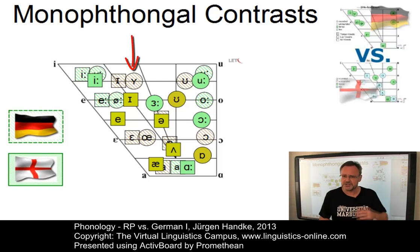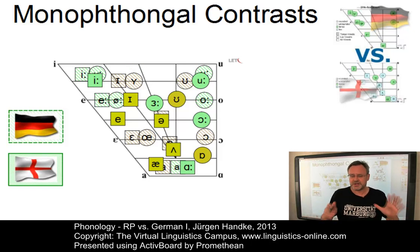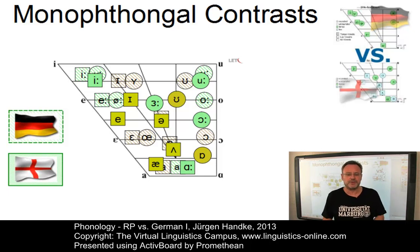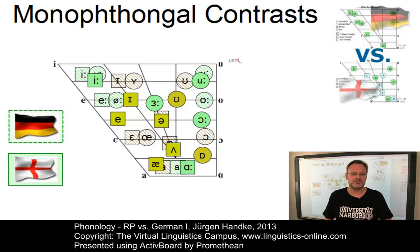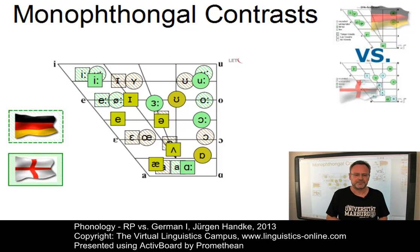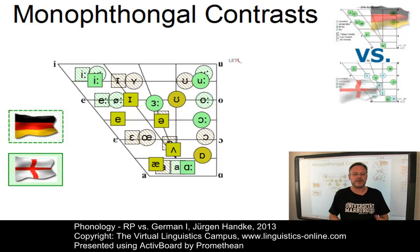There are inventory contrasts as already pointed out — there are no rounded front vowels in RP, but that is not a problem for Germans; rather for RP speakers who want to learn German. And then we have realisational contrasts, meaning the exact tongue position is different for almost each vowel in German as compared with RP. Finally, we have distributional differences, but here we need examples to find out the precise phonetic context of each segment.